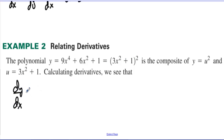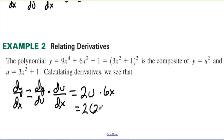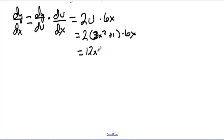Let's find dy/dx using Leibniz notation. We take the derivative of y with respect to u and multiply by the derivative of u with respect to x — the du's cancel if treated as fractions. dy/du, the derivative of the outside function u squared, is 2u. The derivative of the inside function is 6x. Substituting back: 2 times 3x squared plus 1, times 6x, simplifies to 12x times 3x squared plus 1.